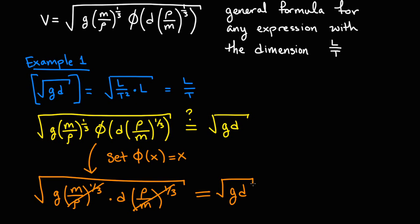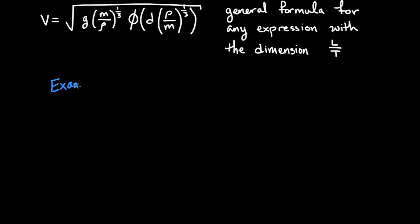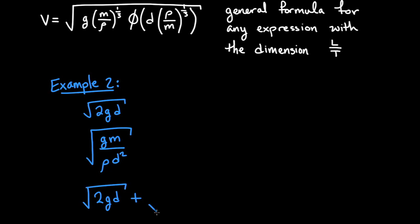And in fact, we claim that any expression with the correct dimension of length over time created using these variables can be written in terms of this formula simply by changing the definition of phi. It can be fun to try this. Come up with different formulas that have the correct dimension. You can even add them together when you're done. Then see if you can find a way to define phi so that our formula is equal to the expression you wrote. Pause the video here.